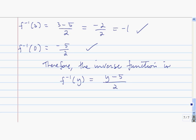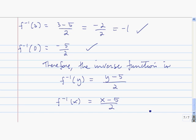Just to recap, the inverse function is f inverse of y equals y minus 5 divided by 2. Since the inverse function can actually be considered as a standalone function, mathematicians usually like to use the same convention to have x as the variable instead of y. So the convention is to write f inverse of x equals x minus 5 divided by 2.